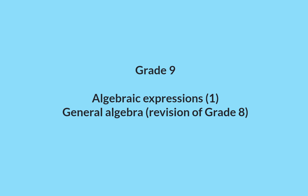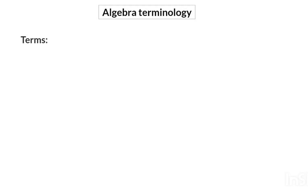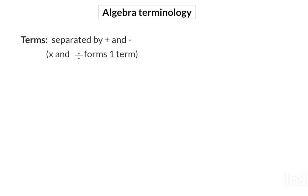In this first video for Grade 9 Algebraic Expressions, we're going to have a look at the general algebra that you learned in Grade 8. We're going to start off with the algebra terminology that you already know. Terms are separated by pluses and minuses, so by addition and subtraction. Any multiplication or division forms one term.